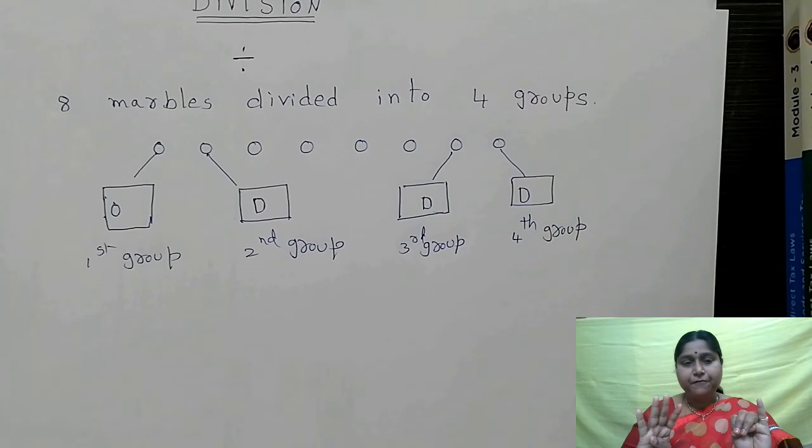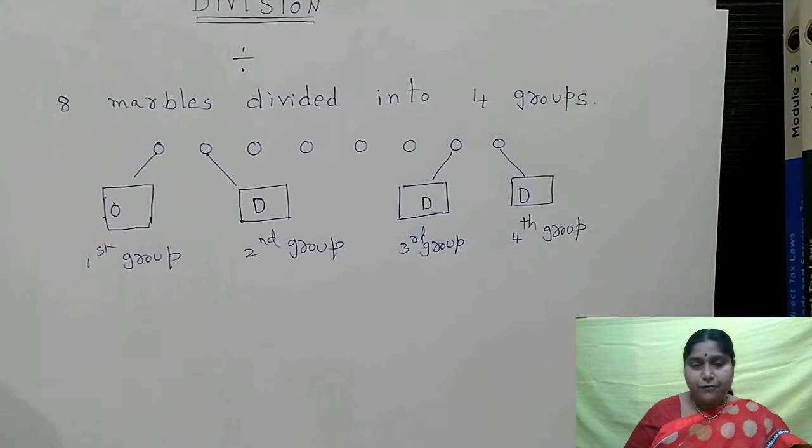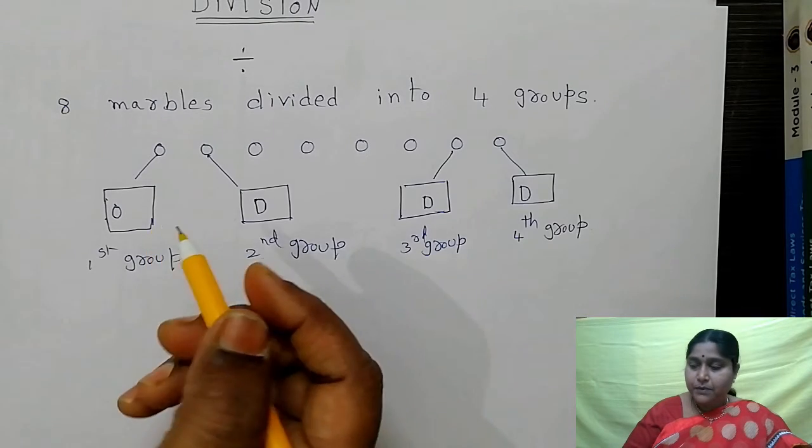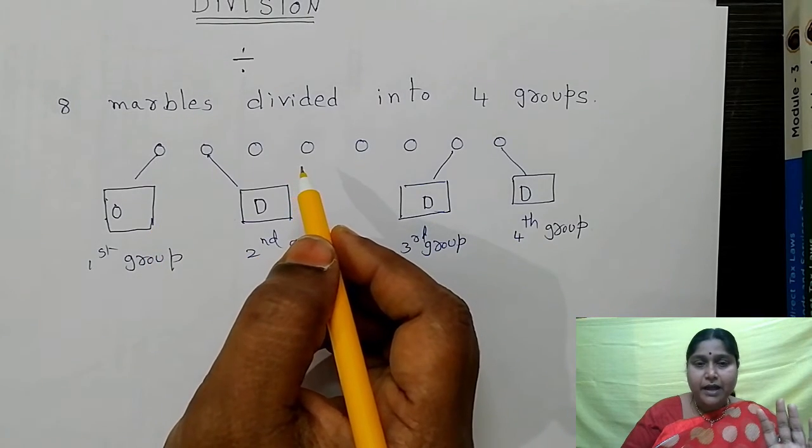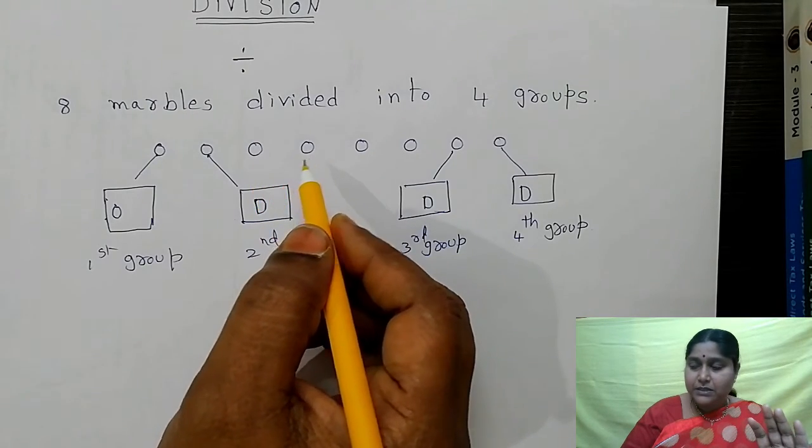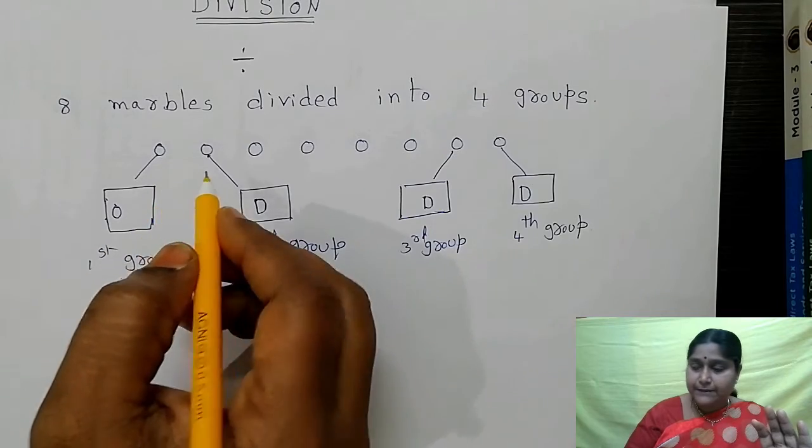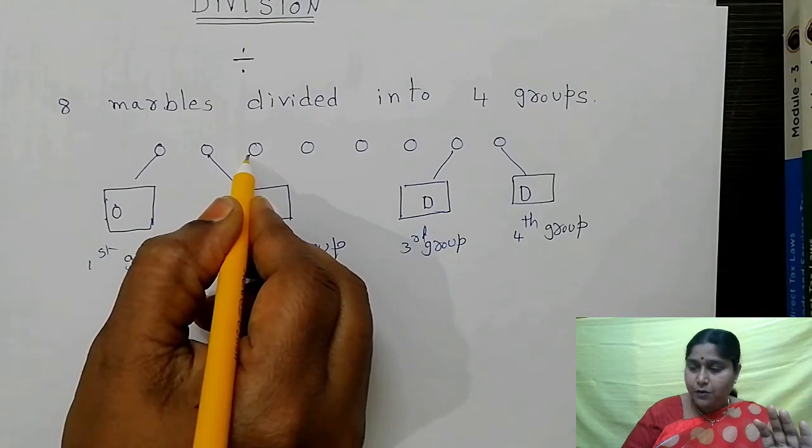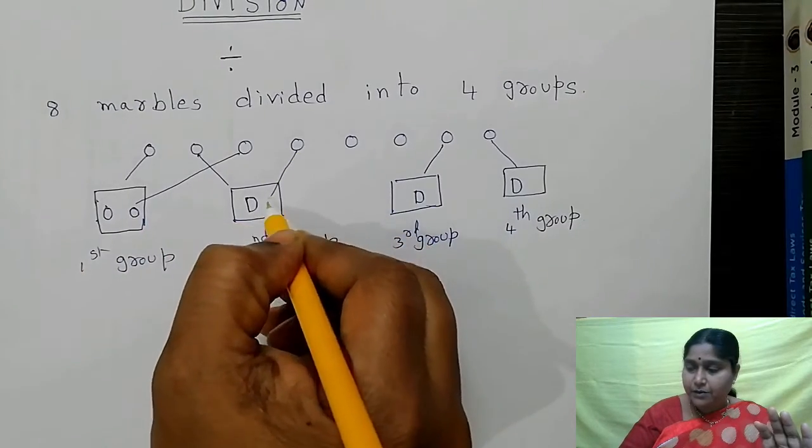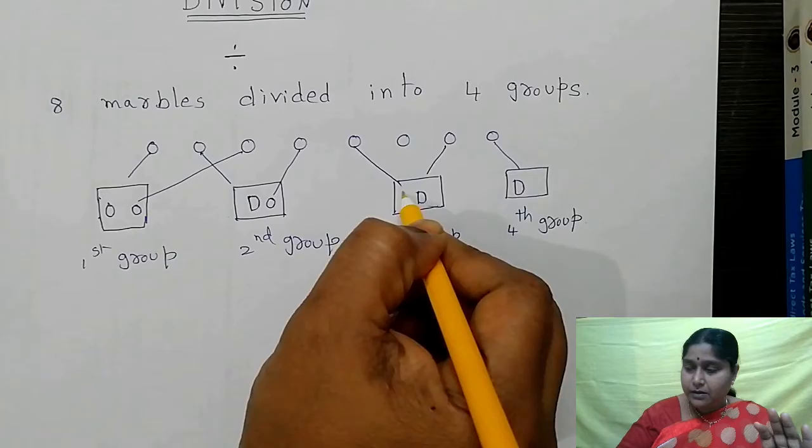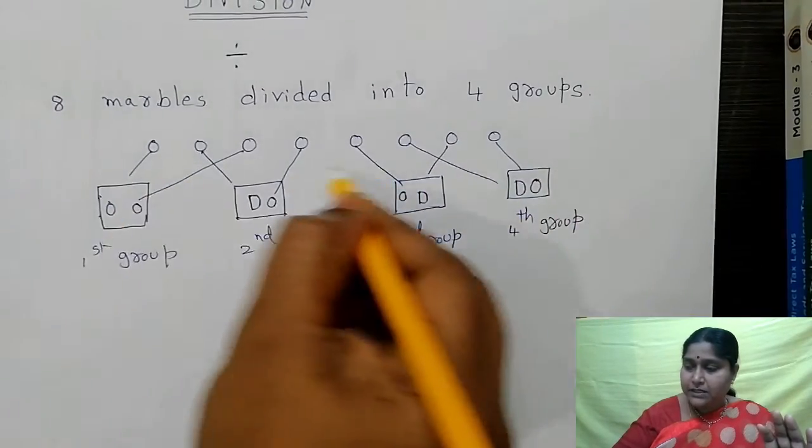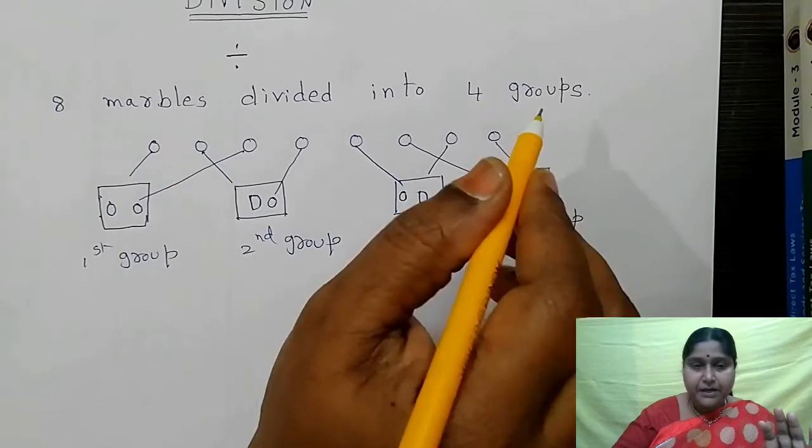Then I kept 4 marbles in 4 boxes, 4 groups. That means in each group I kept 1 marble. Now how many are left? Again, 4 marbles left. Again I will put those 4 marbles in the groups. See, here: one more in the first box, one more in the second box, one more in the third box, one more in the fourth box. Now see, total completed: 8 marbles.